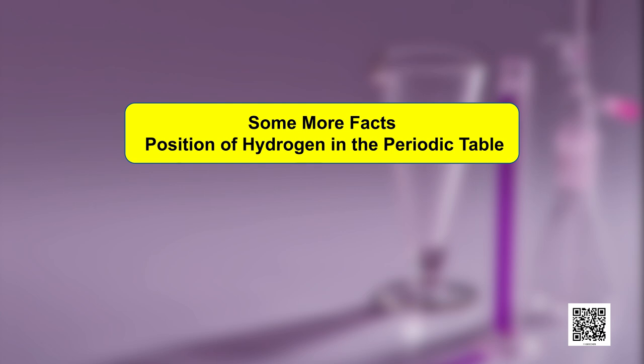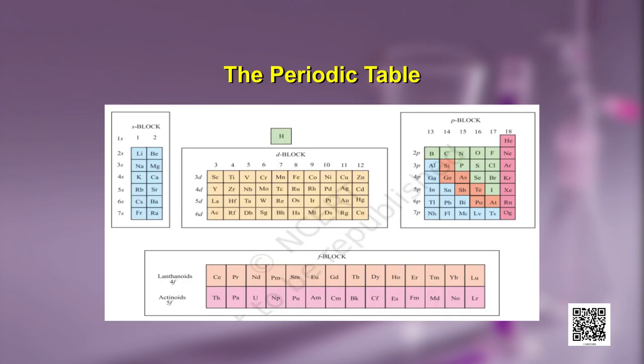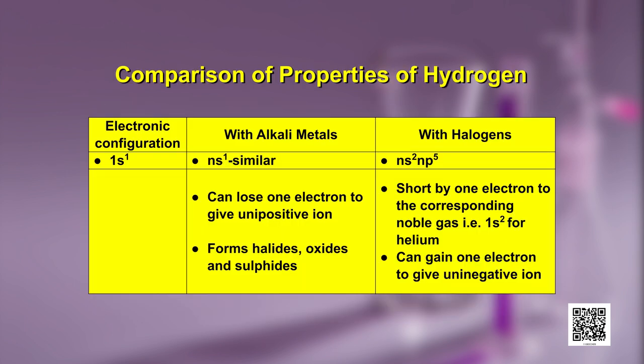As you can see in the periodic table, hydrogen is the first element and why has it been given such a unique position? You know that in the periodic table elements are placed according to their electronic configurations. The electronic configuration of hydrogen is 1s1. It has some similarity to the alkali metals, while we will also compare its similarity with halogens.